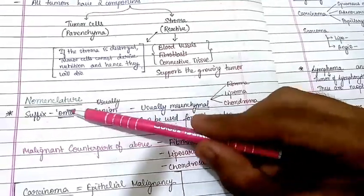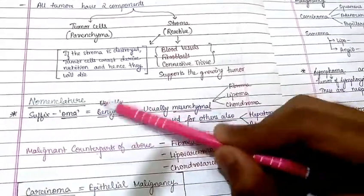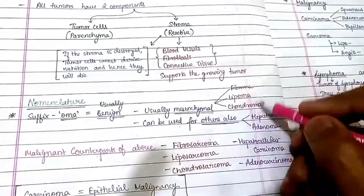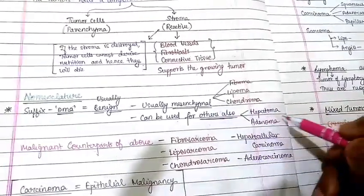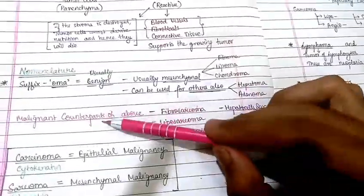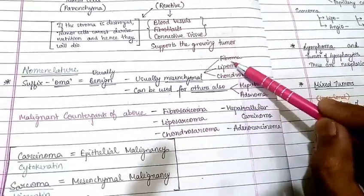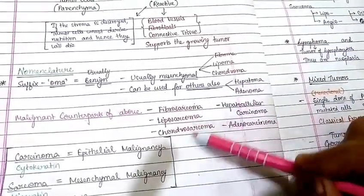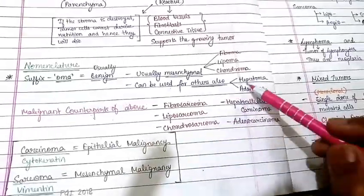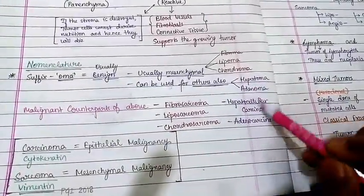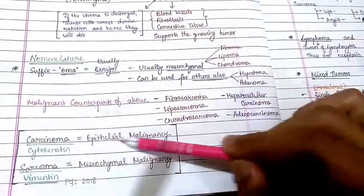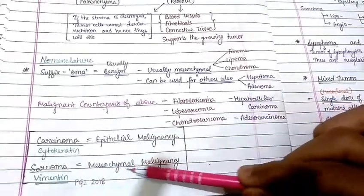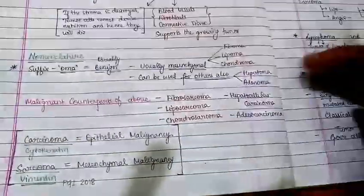In nomenclature, we use the suffix '-oma' for benign tumors, usually referring to mesenchymal tumors — fibroma, lipoma, chondroma — but it can also be used for others such as hepatoma and adenoma. The malignant counterparts are: fibroma → fibrosarcoma, lipoma → liposarcoma, chondroma → chondrosarcoma, hepatoma → hepatocellular carcinoma, adenoma → adenocarcinoma. 'Carcinoma' is used for epithelial malignancy and 'sarcoma' for mesenchymal malignancy.